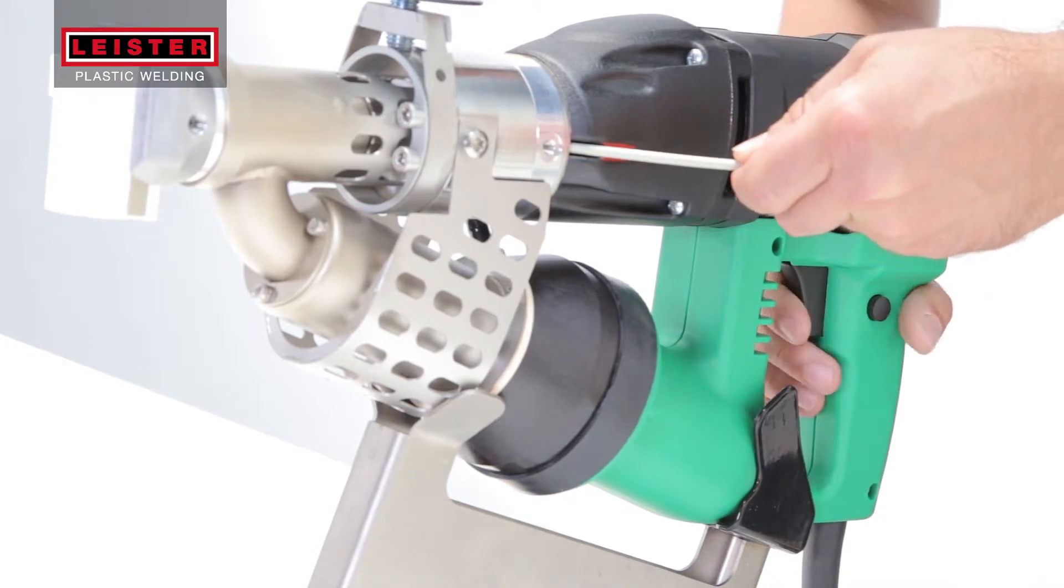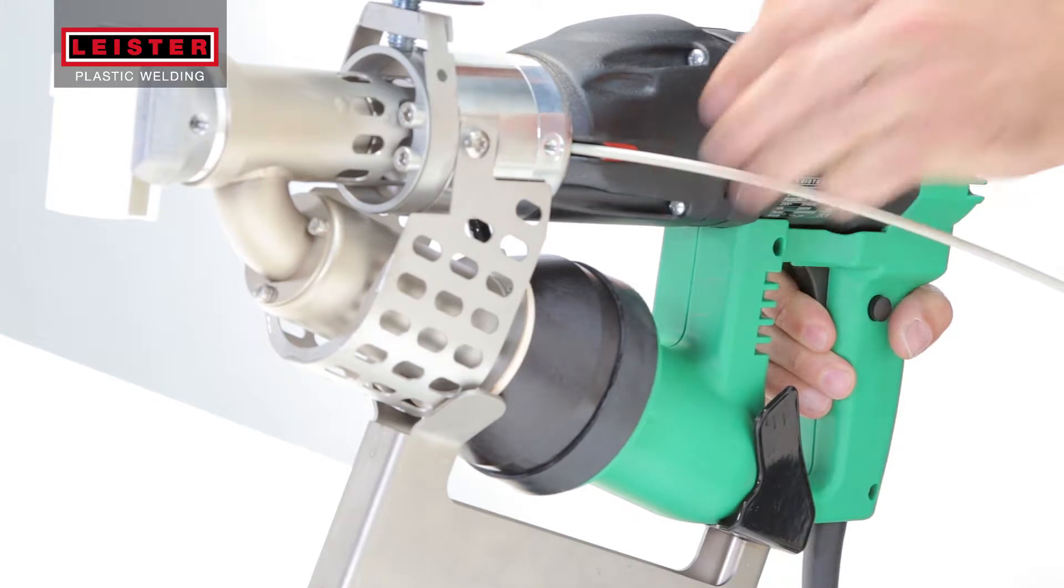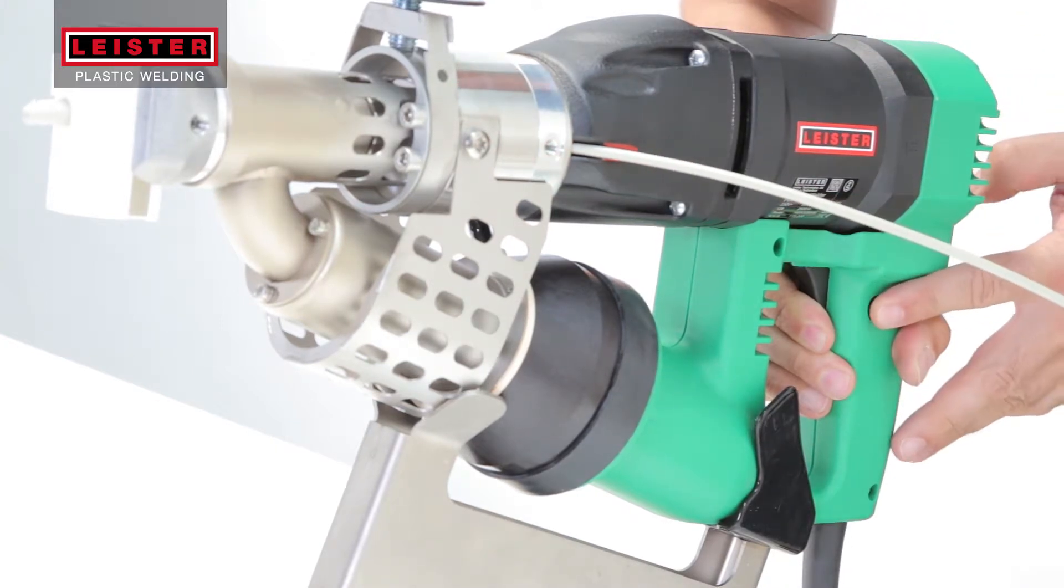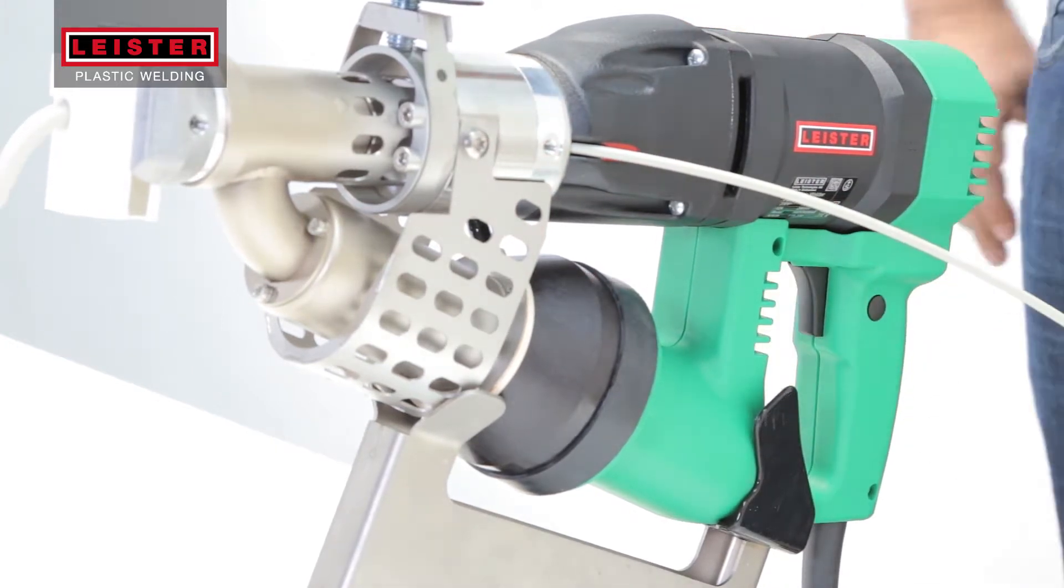Insert the welding rod on one side or the other, but only at one side at a time. Engage the drive motor with the trigger and locking switch.